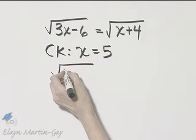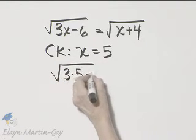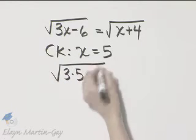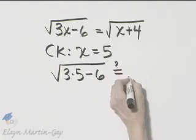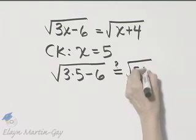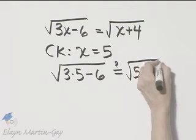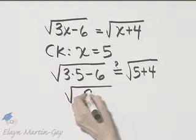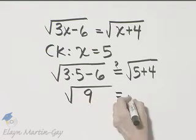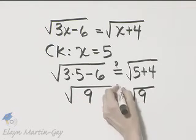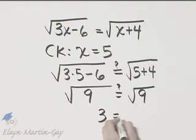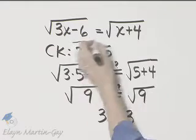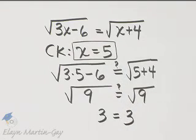Everywhere there's x, I put 5. So 3 times 5 minus 6, square root of that, is that equal to the square root of 5 plus 4? Well, let's see. 3 times 5 is 15. 15 minus 6 is 9. Is that equal to the square root of 9? Of course it is. And we have 3 is equal to 3. So this checks, and the solution is 5.